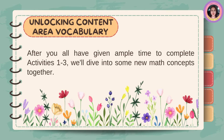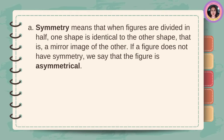Let us unlock your vocabulary. After you all have been given ample time to complete Activities 1 to 3, we'll dive into some new math concepts together. Symmetry means that when figures are divided in half, one shape is identical to the other shape — that is, a mirror image of the other. If a figure does not have symmetry, we say that the figure is asymmetrical.